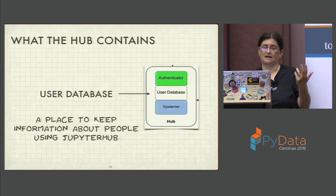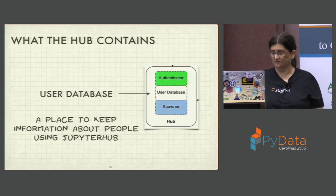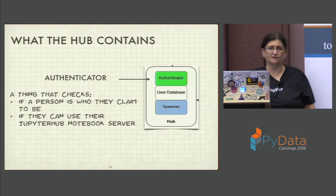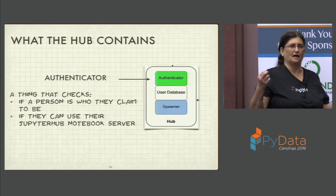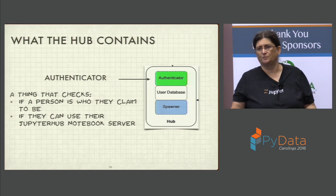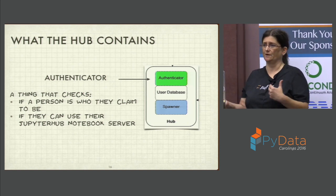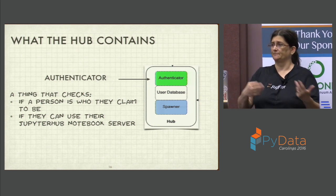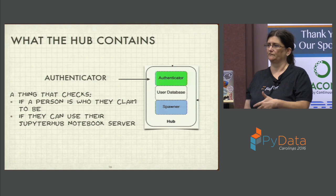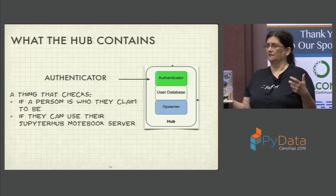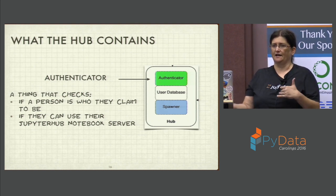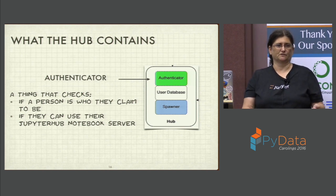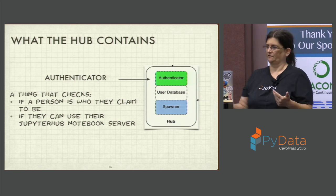The user database is a place to keep information about people using JupyterHub. The authenticators can be PAM, OAuth, or other authentication modes — some written by the Jupyter team, some by the community — and they determine whether a user has the ability to access a notebook server. The spawner then spawns that notebook server.